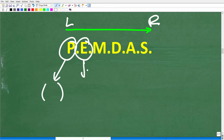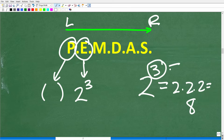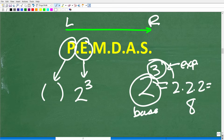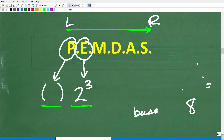The next thing is E, which stands for exponents — but you can think of this as powers. So if you have any powers in your problem, you do this next. When you have a power like 2 to the third power, this means take 2 and multiply it by itself three times: 2 times 2 times 2, which of course is 8. The little number up here is called the exponent, and the big number down here is called the base. The entire thing is a power. Sometimes you won't have a power in your problem — no big deal, just move on to the next step.